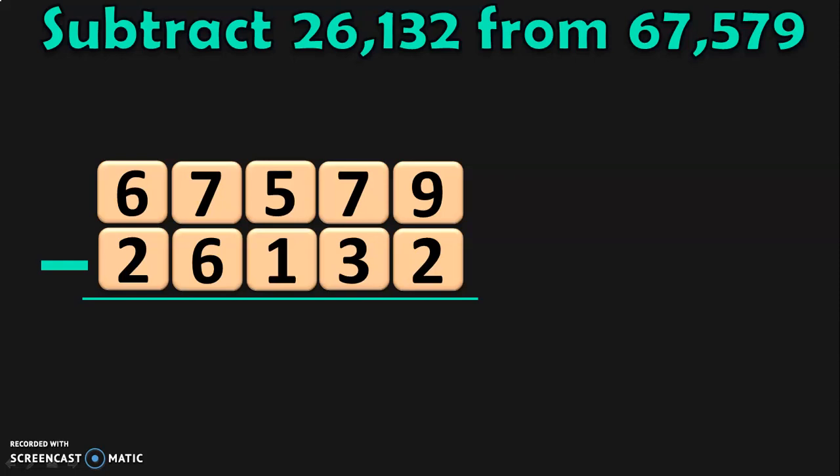First, write down the numbers one below the other. Always, it's a good practice to write down the place values: ones, tens, hundreds, thousands, and ten thousands. Next, begin the subtraction from the ones place.